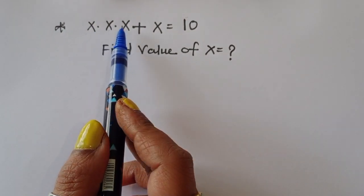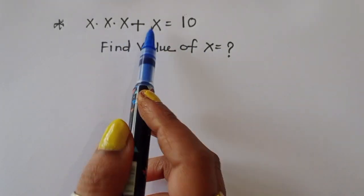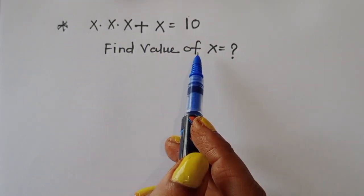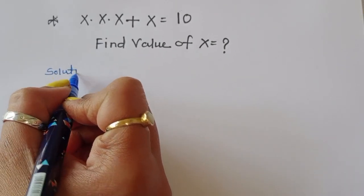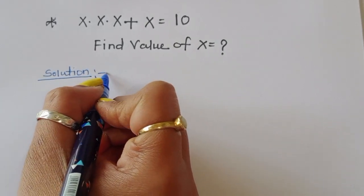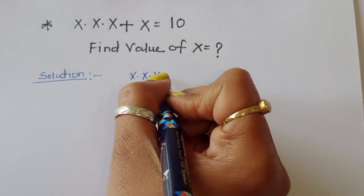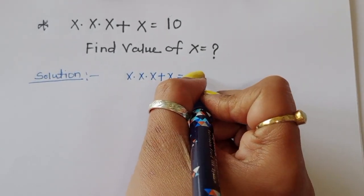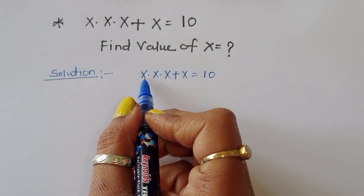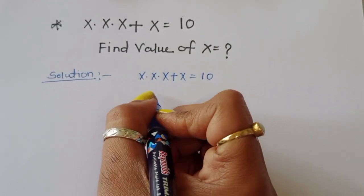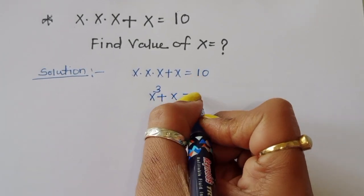The question is given: x times x times x plus x is equal to 10. We have to find out the value of x. x times x times x can be written as x cube, so x cube plus x is equal to 10.